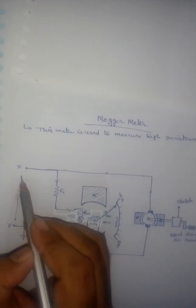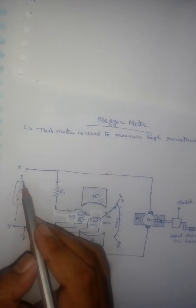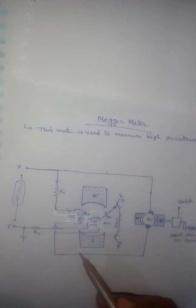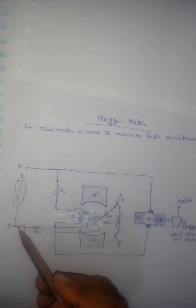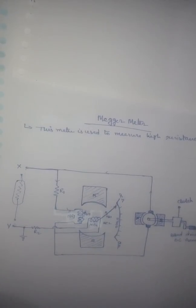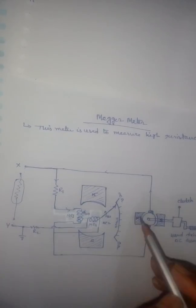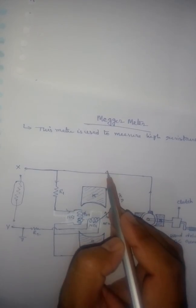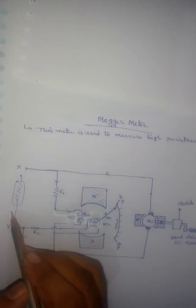Now, if we connect some unknown resistance, an insulator, or a cable at the test terminals, we can see what happens. When we drive the hand-driven DC generator, it will generate DC voltage and current. That current will split — some current will flow through MC1 and some current will flow through MC2.